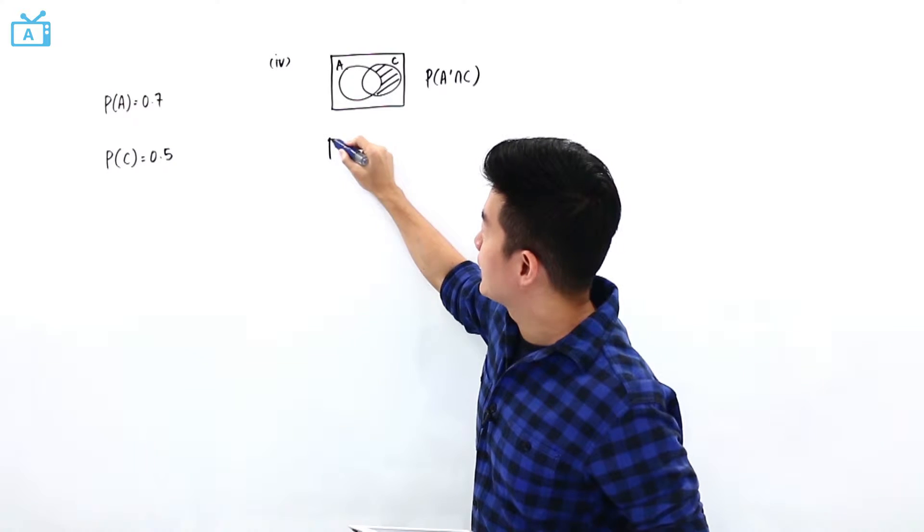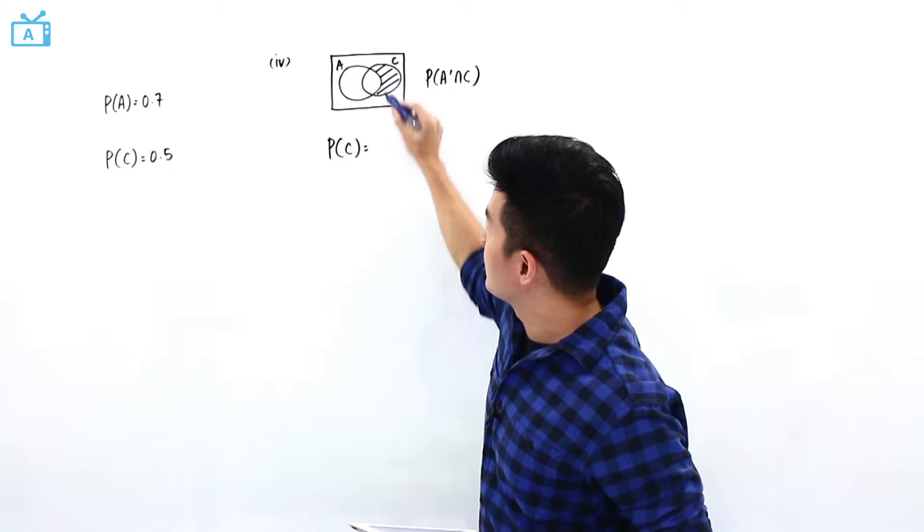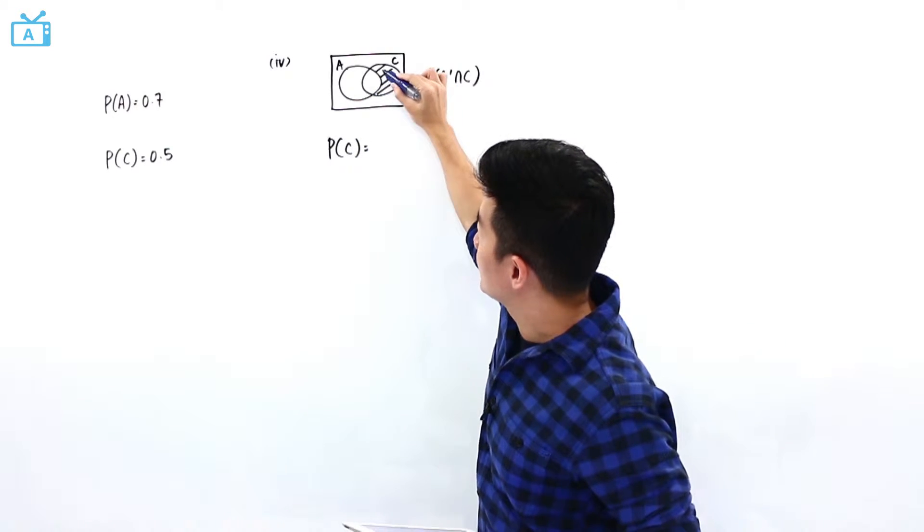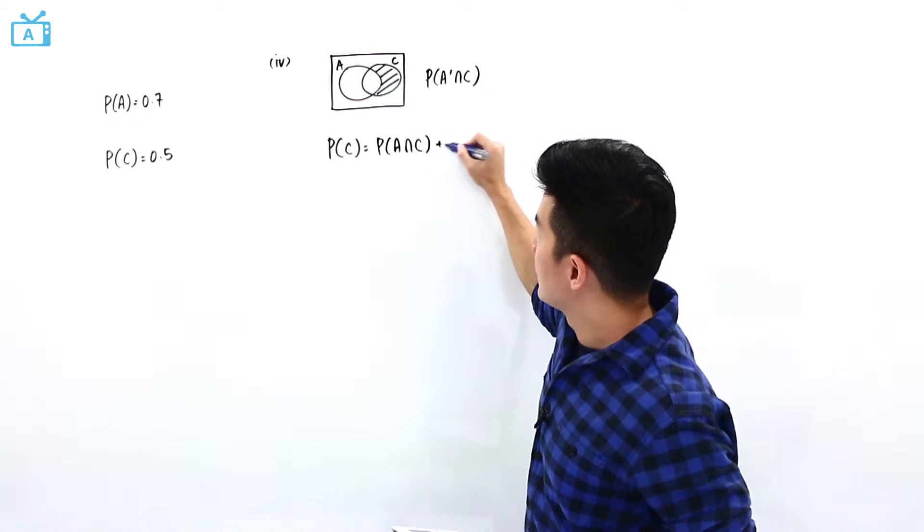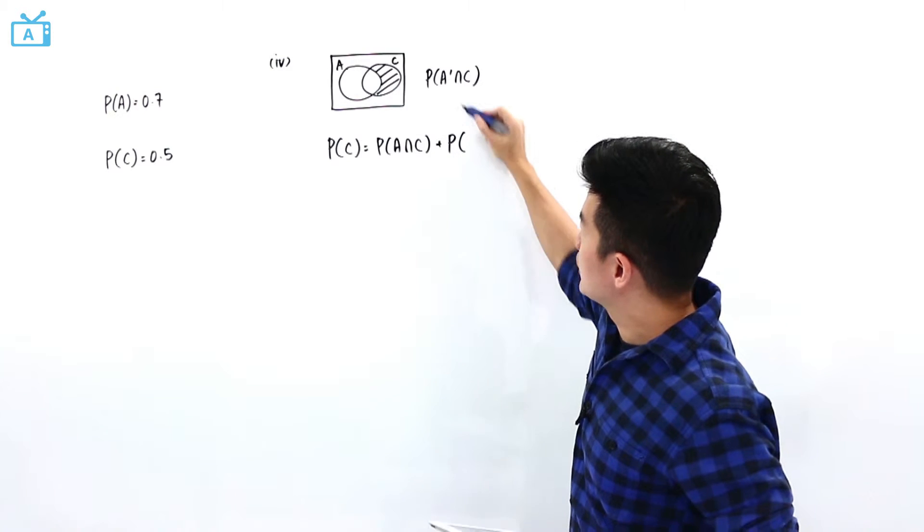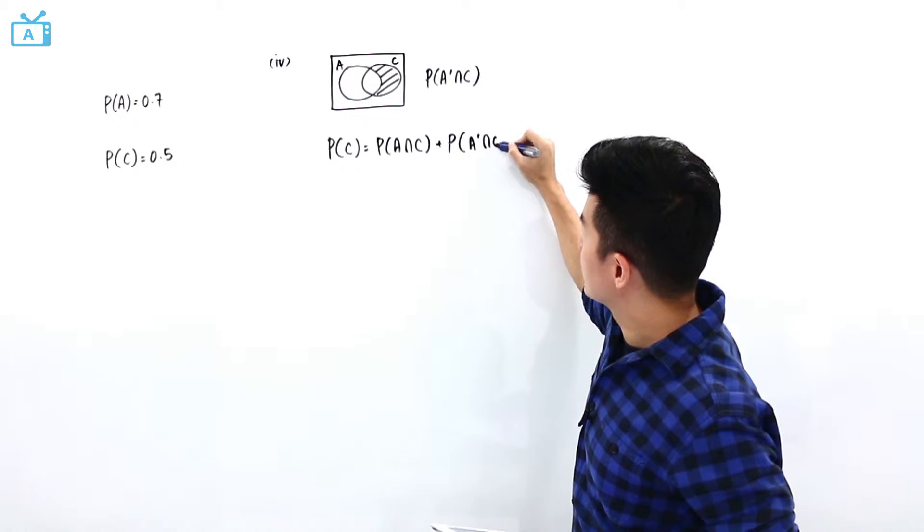So looking at this region, I can also see that the probability of C is going to be made up of this region plus this shaded region. And this region here is the probability of A intersect C plus the probability of the shaded region which is A' intersect C.